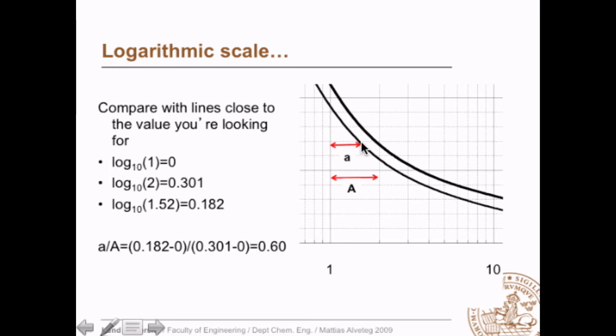So this distance here relates to this distance here as the logarithm of 1.52 minus logarithm of 1, 0.182 minus 0, divided by the logarithm of 2, 0.301, minus the logarithm of 1, 0. So that is 0.60.